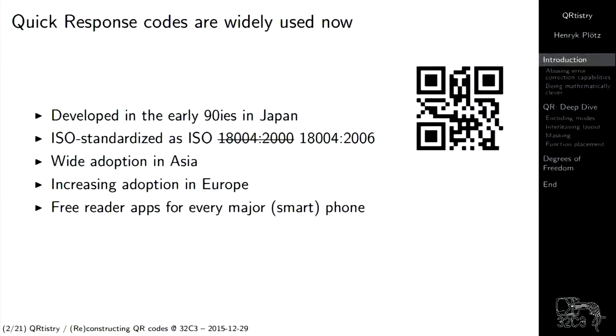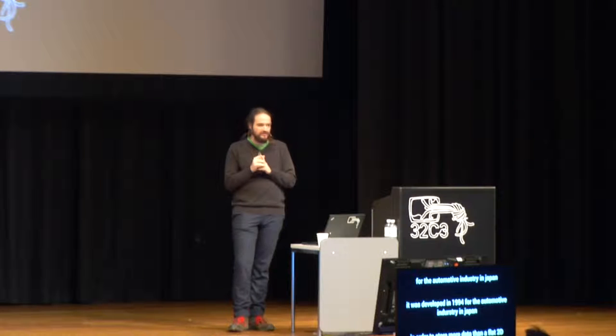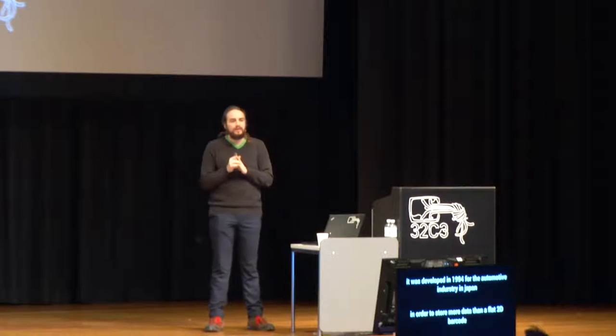As you might or might not know — before the talk I met a couple of people who didn't know what a QR code is. It's like a barcode. QR stands for quick response. QR codes have wide adoption. QR codes have been used in Asia, and especially in the last years I have seen very many QR codes in Europe and also here at this Congress compared to last year. There is a lot more spread.